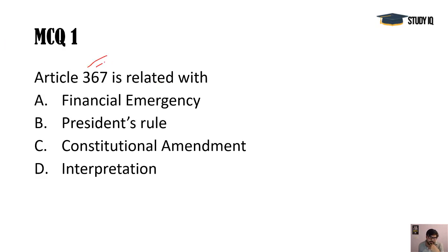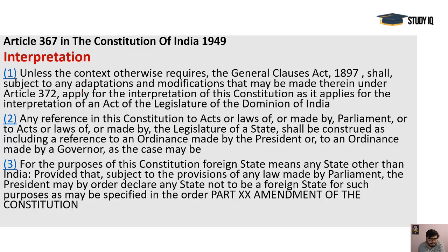The first question is regarding Article 367. In the morning session I mentioned this issue — Sushir Parasharthit wrote an important article about the interpretation of constitutional provisions including Article 370, and how J&K has been made a UT. The answer is D because amendment is Article 368, President's Rule is 356, and financial emergency is 360. Article 367 talks about how acts and ordinances by the President and Governor must be construed.